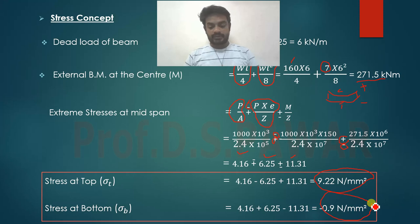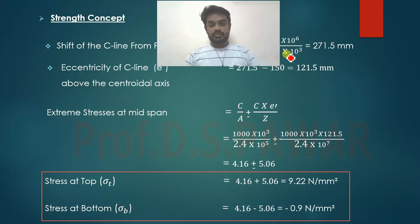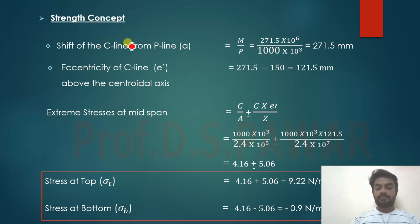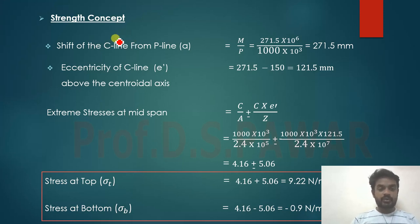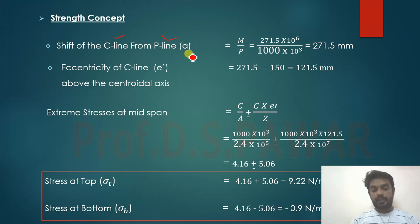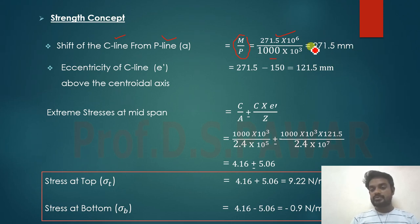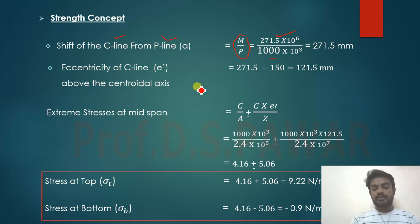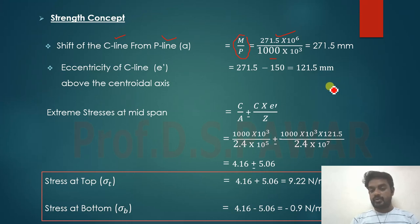Now we calculate the stresses using the strength concept. In the strength concept, we find the distance between the P-line (force line) and the C-line (concrete line). The shift of the C-line from the P-line is M/P = 271.5 × 10⁶ / 1000 × 10³ = 271.5 mm.